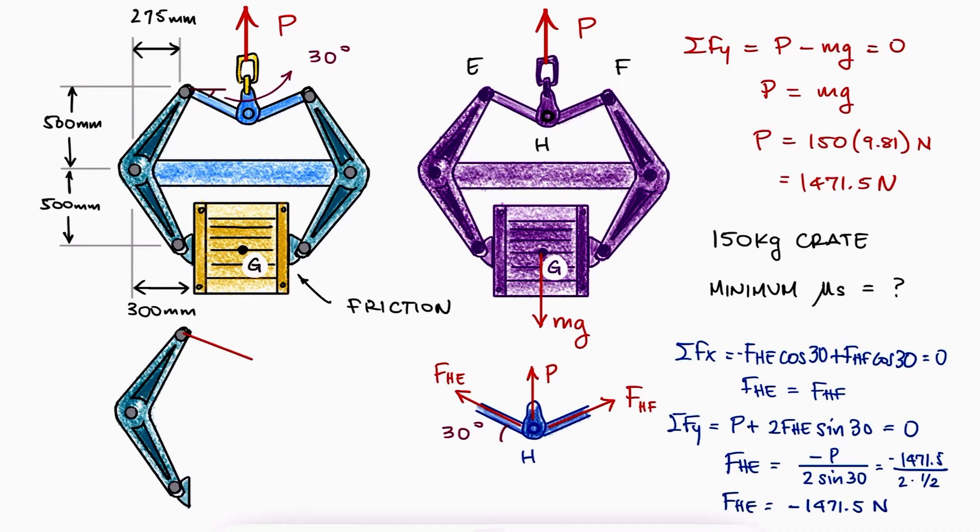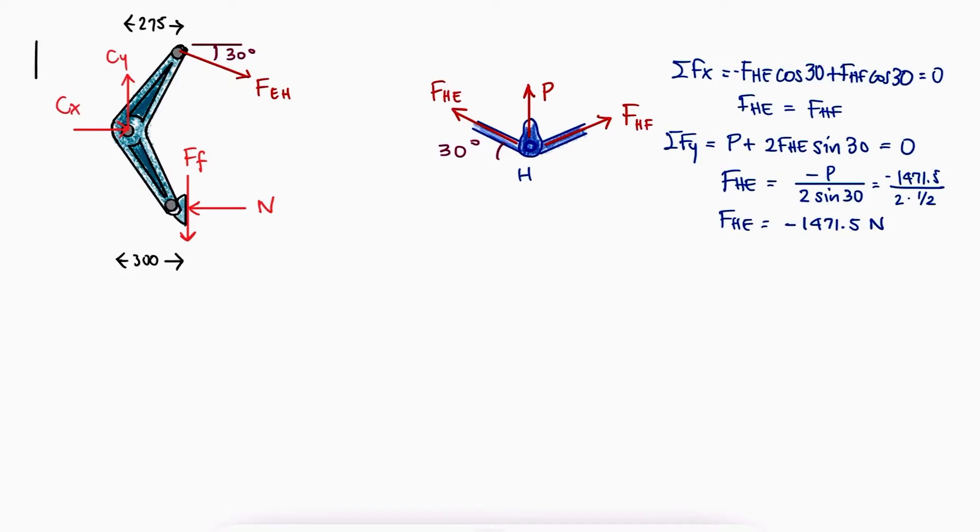With the force from H to E, we can draw a free body diagram of the left bracket where we see the reactions at pin C, and the normal reaction from the box to the tong at A together with the friction force, which is trying to push down together with the box, to write a sum of moments about C.